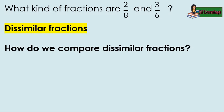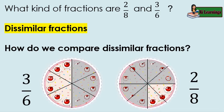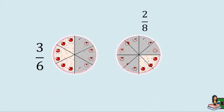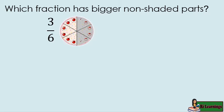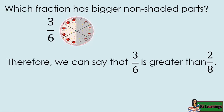How do we compare dissimilar fractions? Let's compare the non-shaded parts of the given fractions. Which fraction has bigger non-shaded parts? The three-sixths has bigger non-shaded parts. Therefore, we can say that three-sixths is greater than two-eighths, or written in symbols: three-sixths is greater than two-eighths.